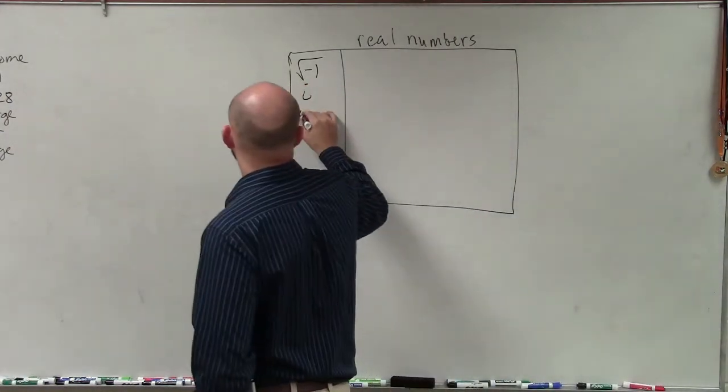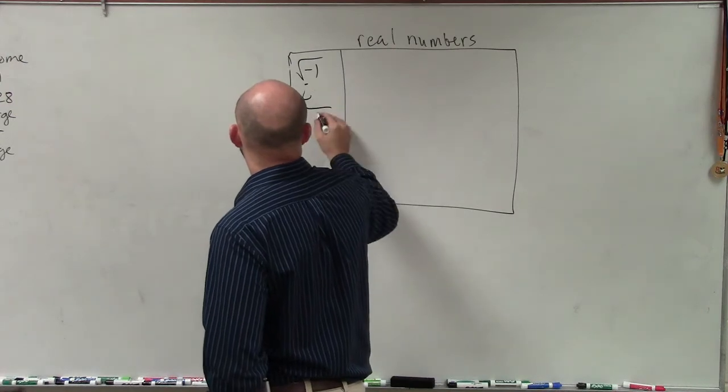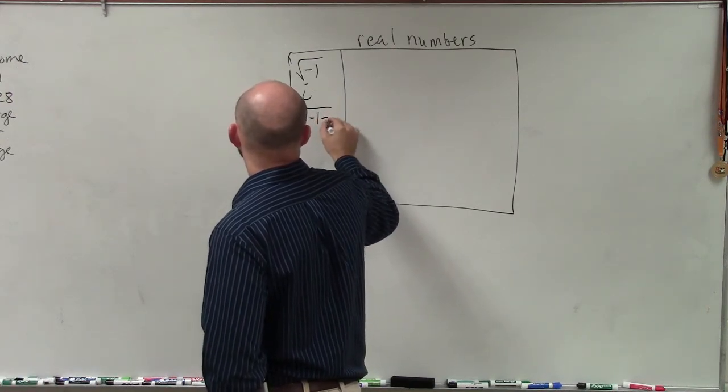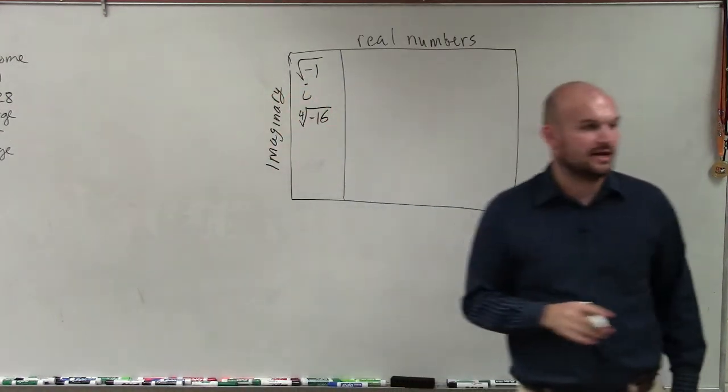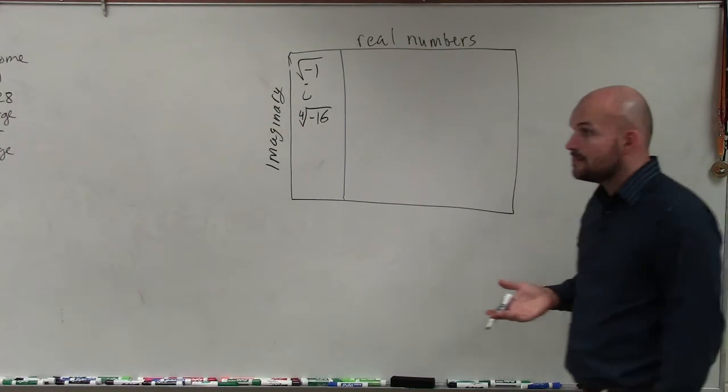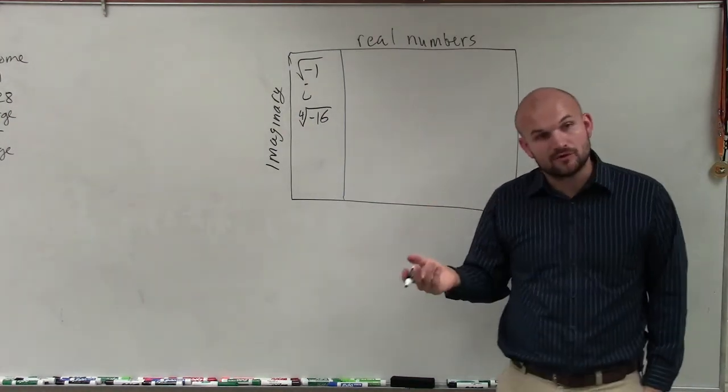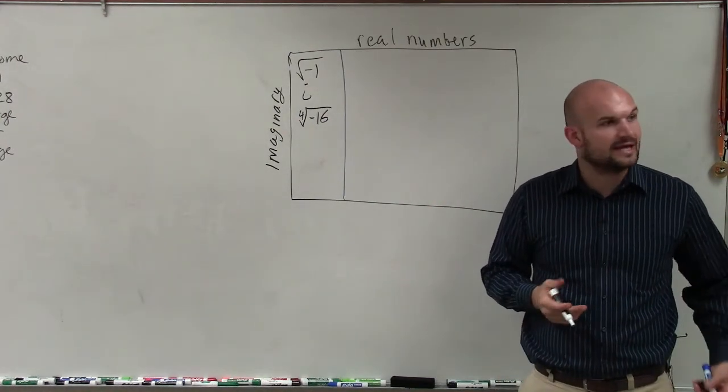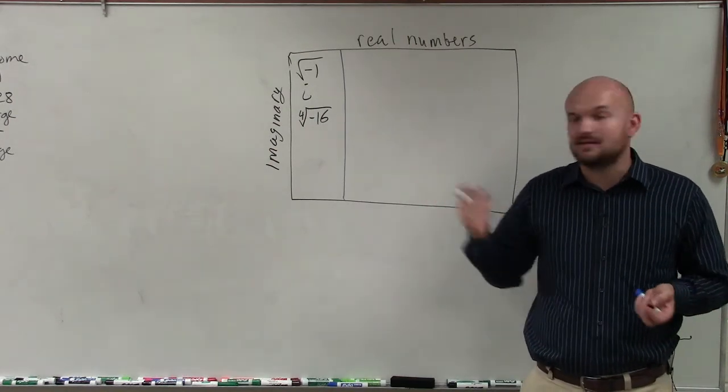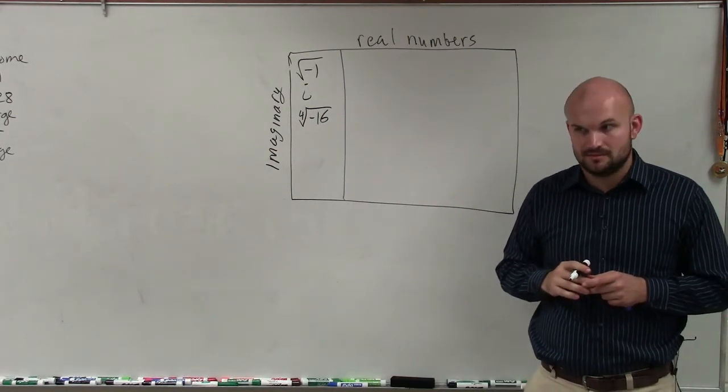So for instance, I could do the fourth root of negative 16. OK? Yeah, you can take the fourth root of 16. But it's negative. And the fourth root is an even root. So you can't do that, because there's no number you can multiply by itself four times that's going to be negative. Make sense?